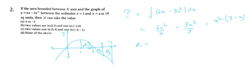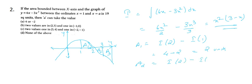Computing each area: A1 = I(2) - I(1) = 4 - 2 = 2 square units. A2 = I(2) - I(3) gives 4 - 4 - 0 = 4 square units. And A3 = I(3) - I(4) gives 0 + 16 = 16 square units. So A3 = 16 corresponds to the region from 3 to 4.